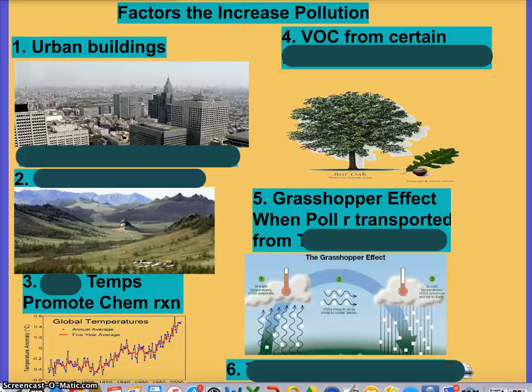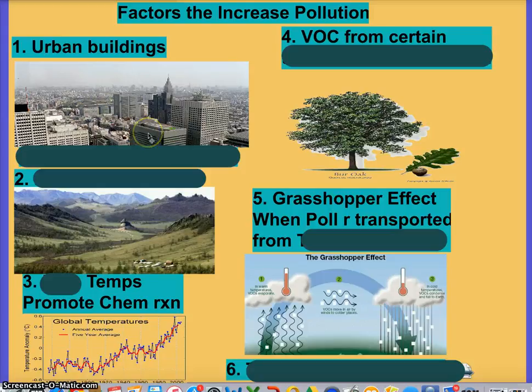Urbanization in general: buildings trap pollutants, so if you live in a very congested city you'll see more pollutants floating around because they have nowhere to go.